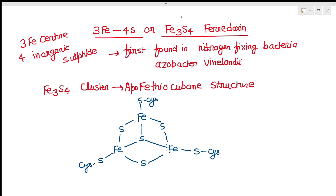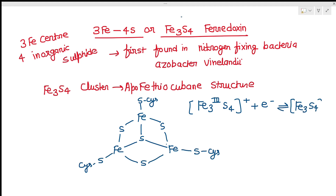Regarding the redox form of Fe3S4: in the oxidized form, all three irons are in the +3 oxidation state. In the reduced form, one iron atom is in the +2 oxidation state and the other two are in the +3 oxidation state.